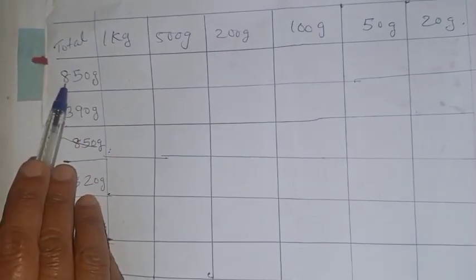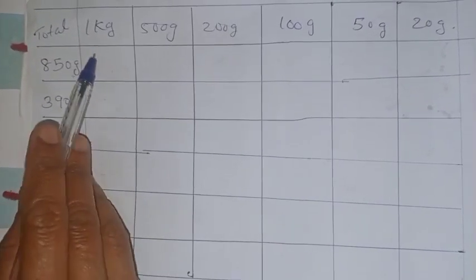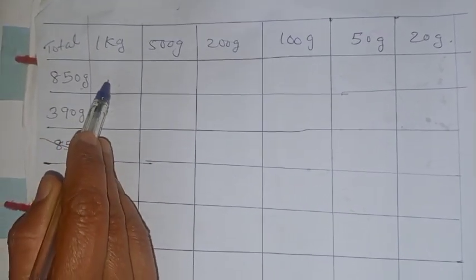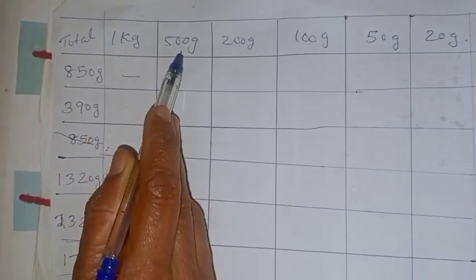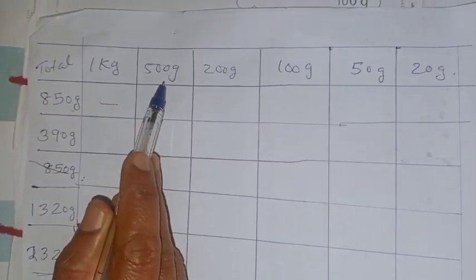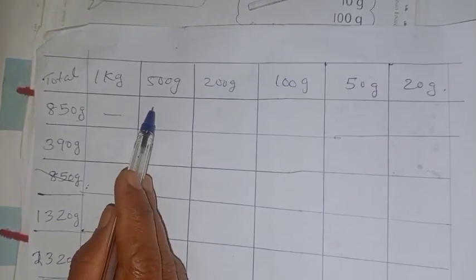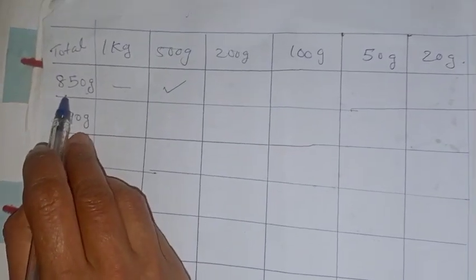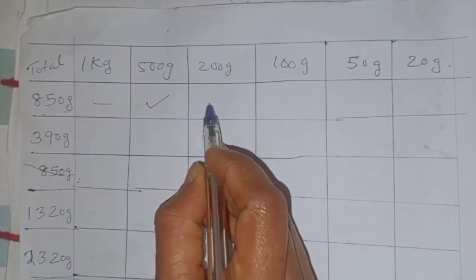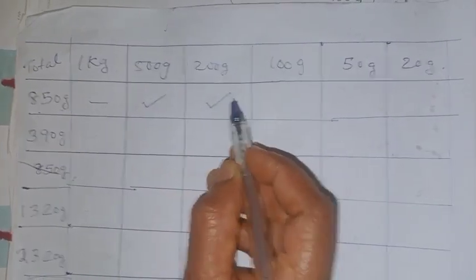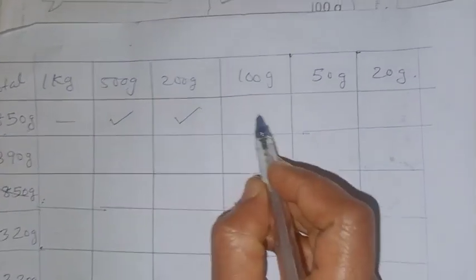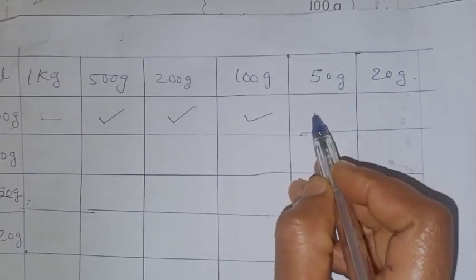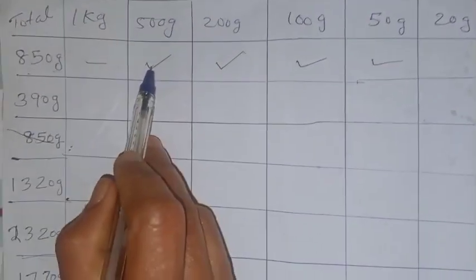First one is 850. Is there any kilogram, children? No, no kilogram here. Then what about 500 gram or half kilogram? Okay, that is there. 500. Then how many 200s? Okay, that is there. One is there. Then what about 100? That also there. Then 50. So 500 plus 200 plus 100 plus 50. That makes 850.